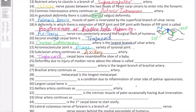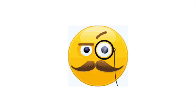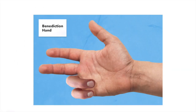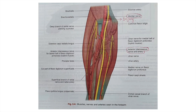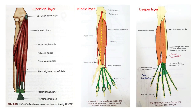Question number 25: the deformity due to injury of median nerve above the elbow is called what? When we say median nerve injury above the elbow, it means we're talking about injury of the median nerve before it innervates the flexor group of muscles of the front of the forearm.